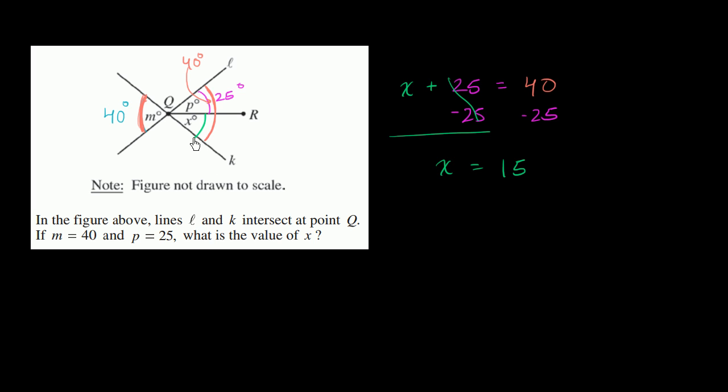So X, this angle right over here is 15 degrees, or X is equal to 15. 15 plus 25 is 40. It's a vertical angle. It has the exact same measure in degree, or exact same measure as this angle right over here, 40 degrees.